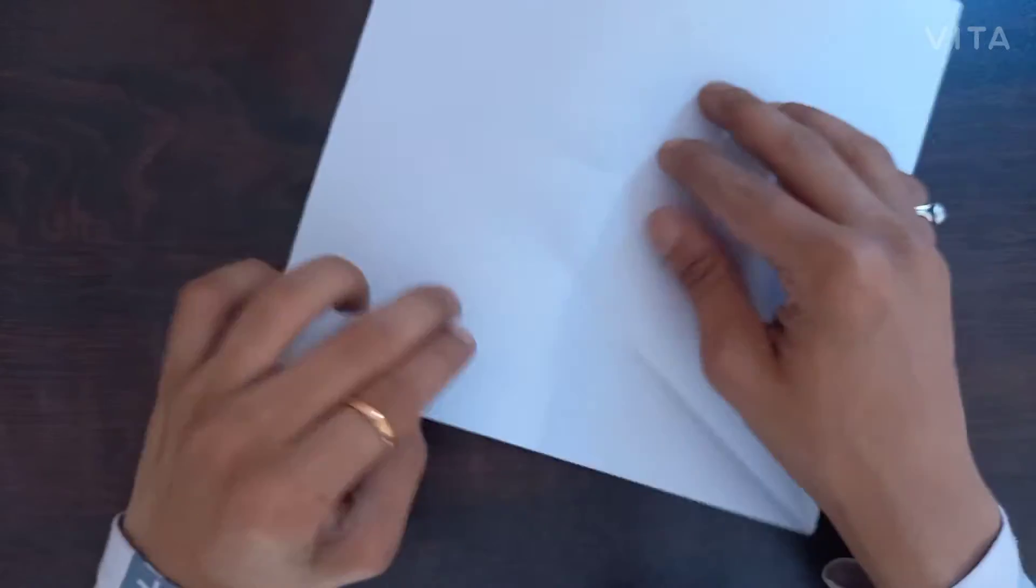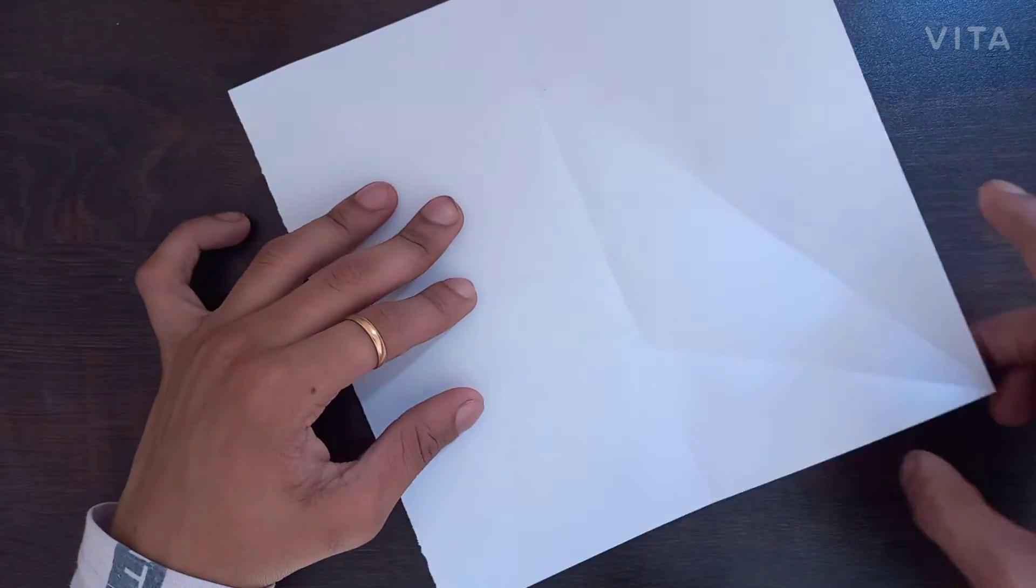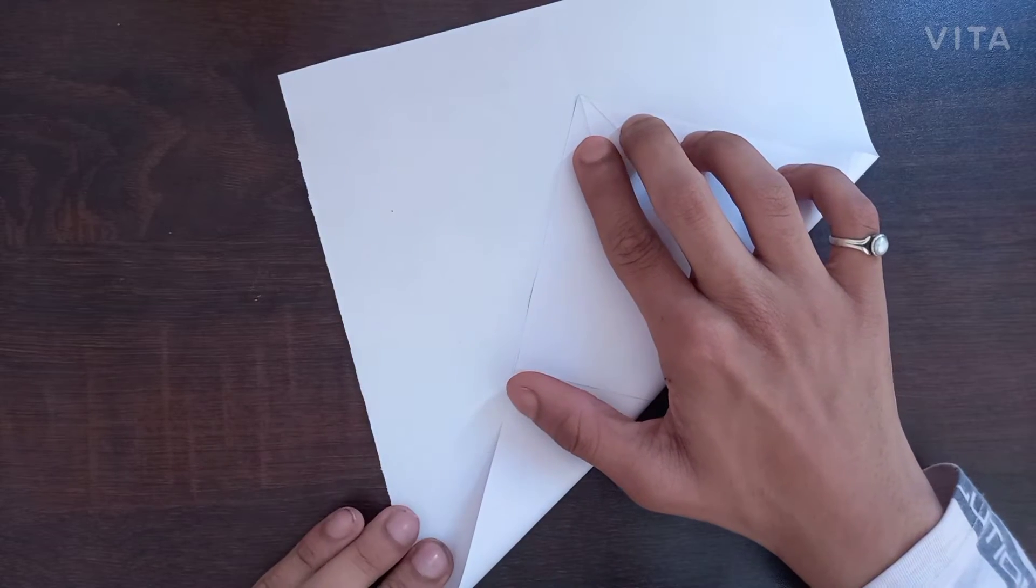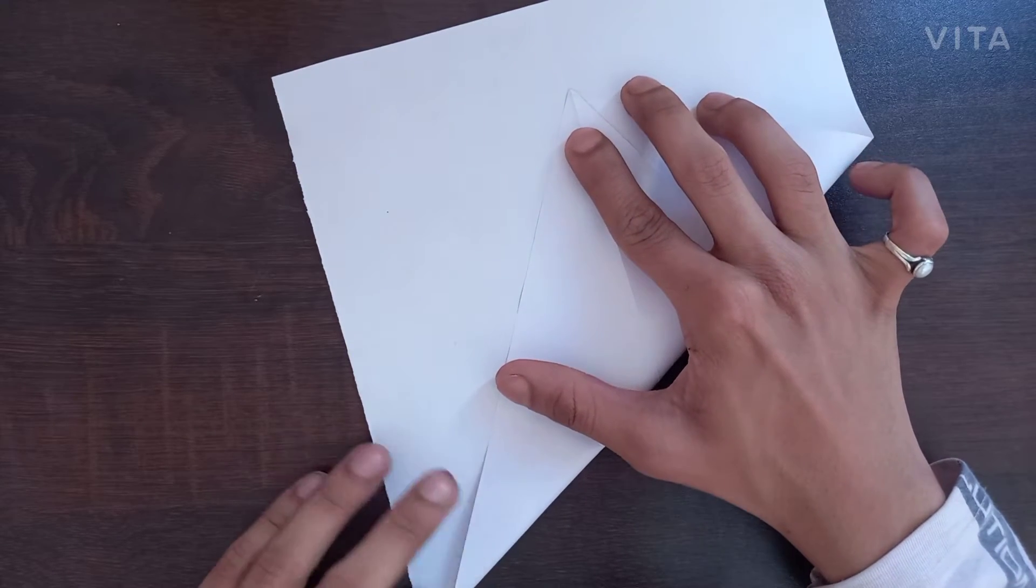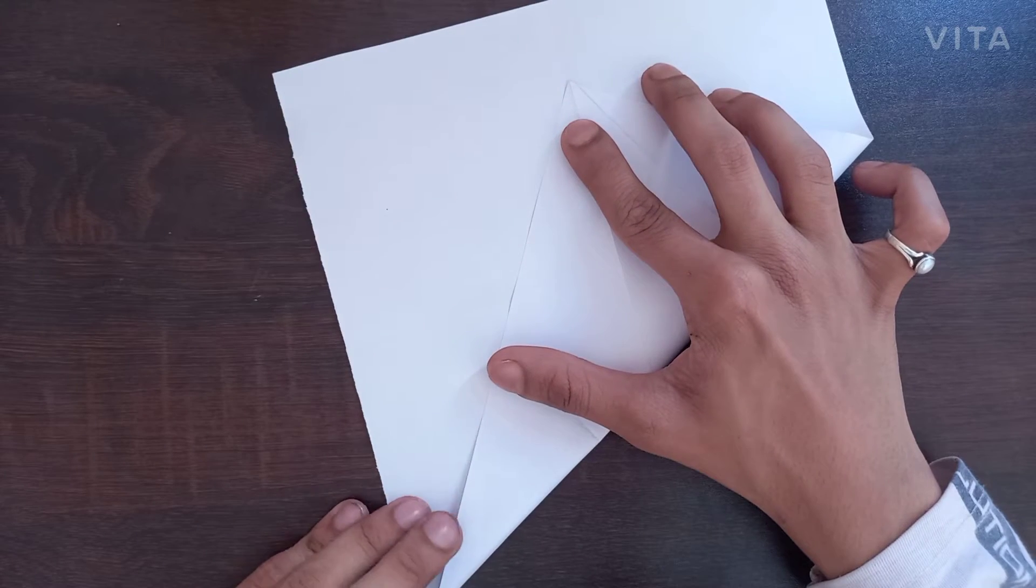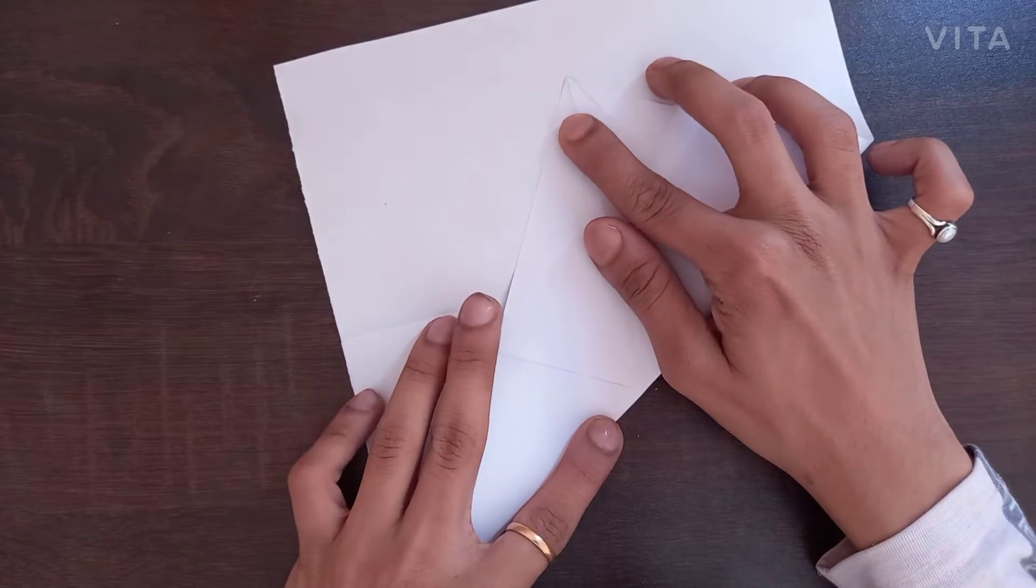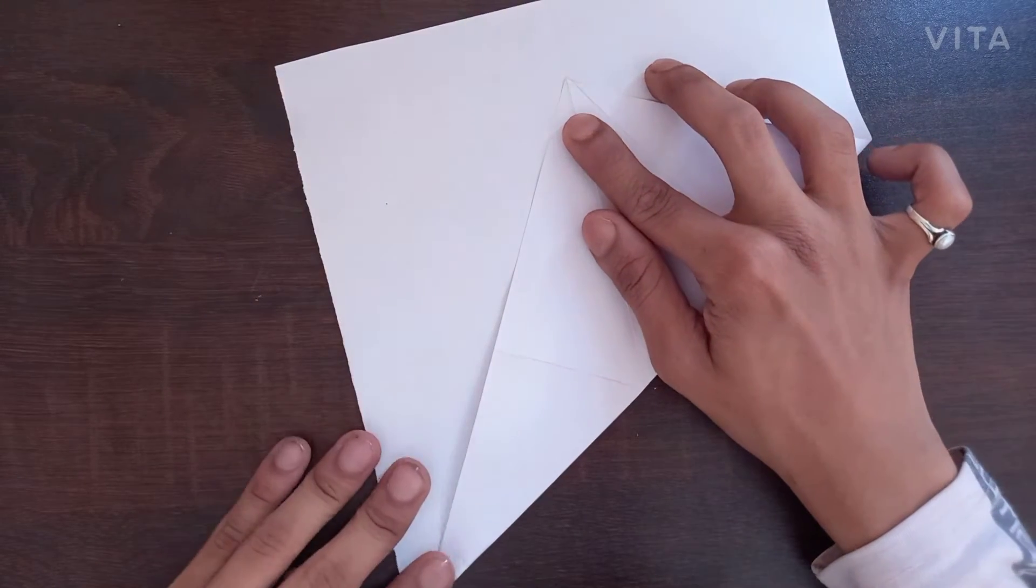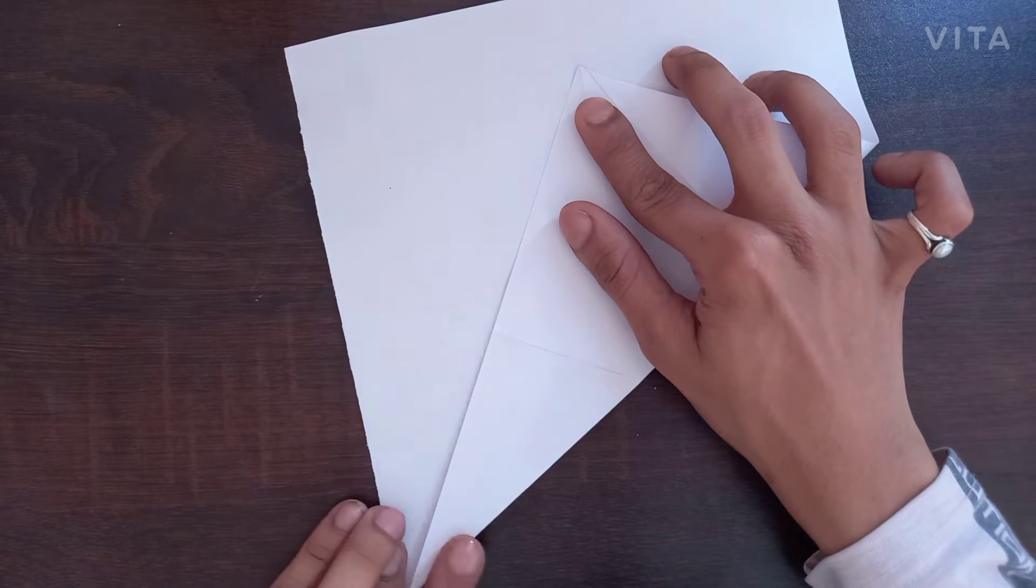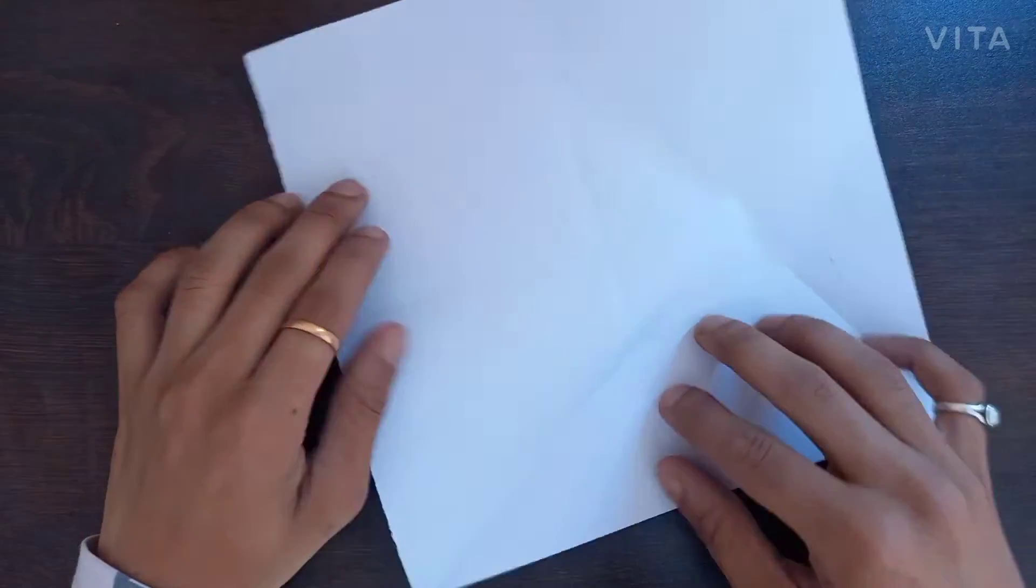Just like this. And you have to fold it only halfway, means till you reach this point. Now repeat the same step for the four sides, means four squares. Just take this point, match it with the middle point. And squeeze it with your nails. And till this point only.